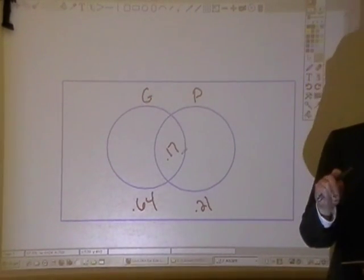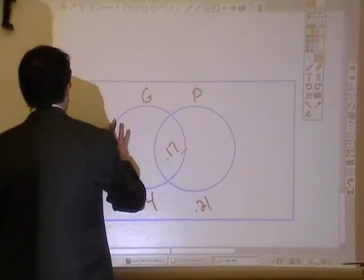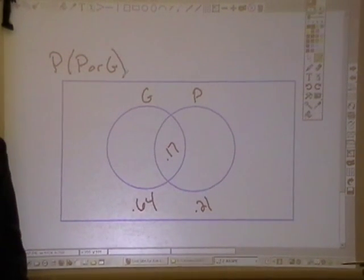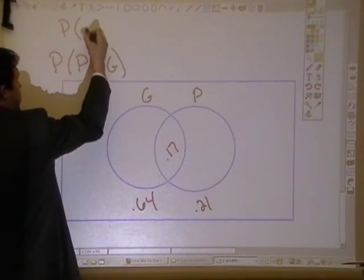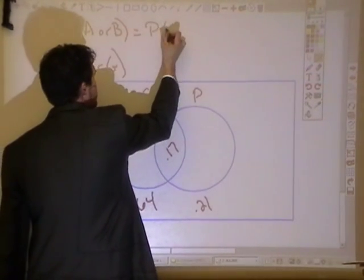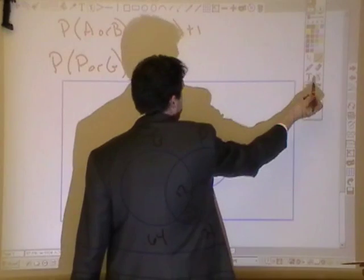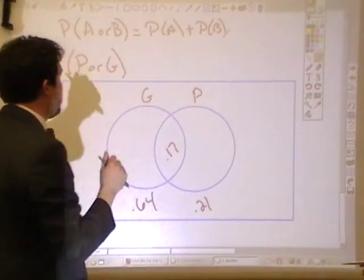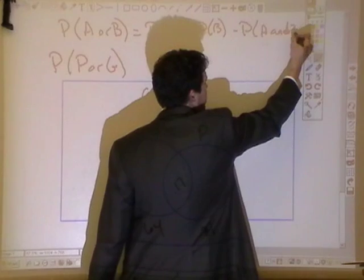Part A says: what's the probability that a home for sale has a pool or a garage? So the probability of a pool or a garage. Now this is an or statement, which means we can look at it like this: the probability of A or B. And the general addition rule is this: probability of A or B is equal to the probability of A plus the probability of B. And then every time we add, we have to ask ourselves, do these groups intersect? And the answer is they do. So I would subtract off that intersection, the probability of A and B.